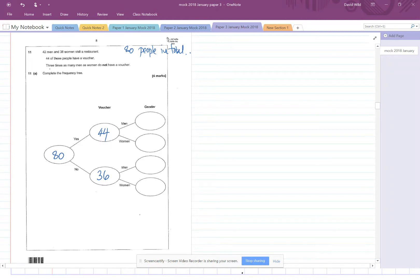Now it tells us that three times as many men as women do not have a voucher. So these are the people who do not have a voucher, this 36. And what I need to do is to share this in the ratio of three to one.